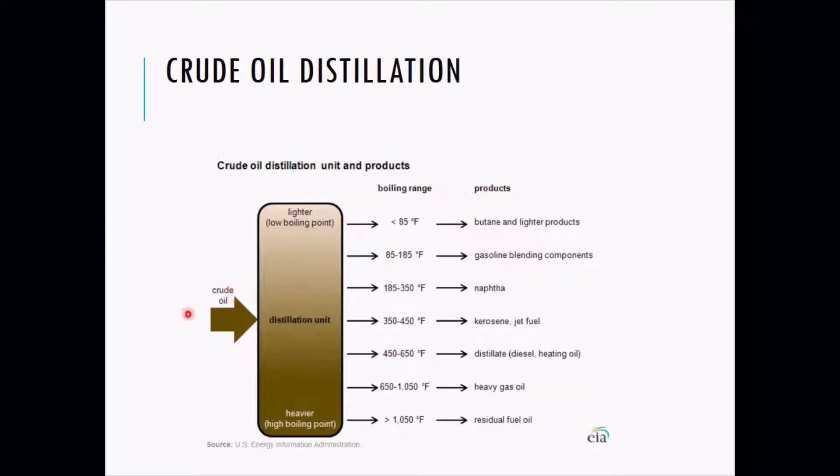When you heat the crude oil, there will be some byproducts which we get at a very lower boiling range. For example, when the crude oil just reaches 85 degrees Fahrenheit, the byproducts from the crude oil are butane and lighter products.